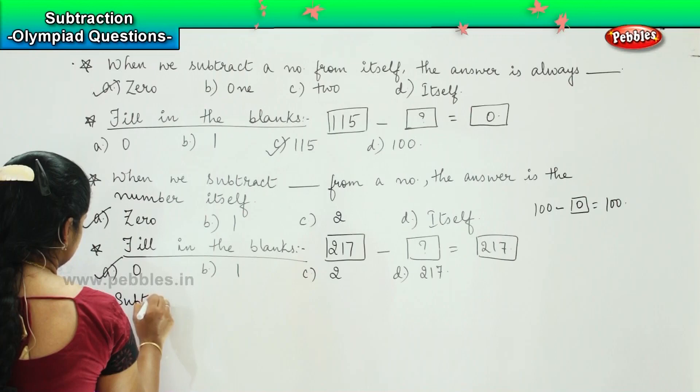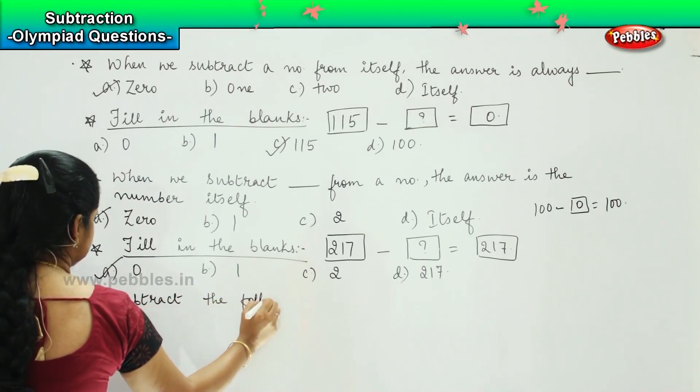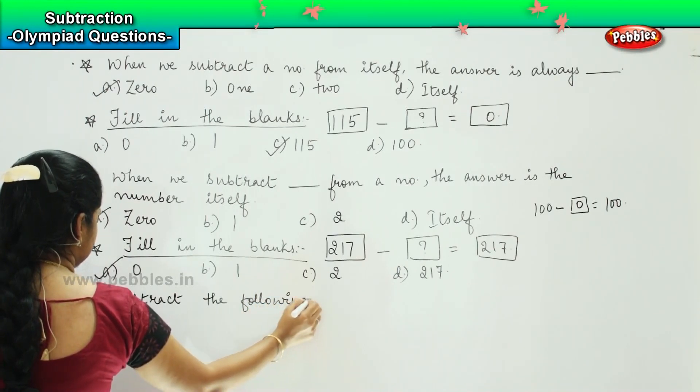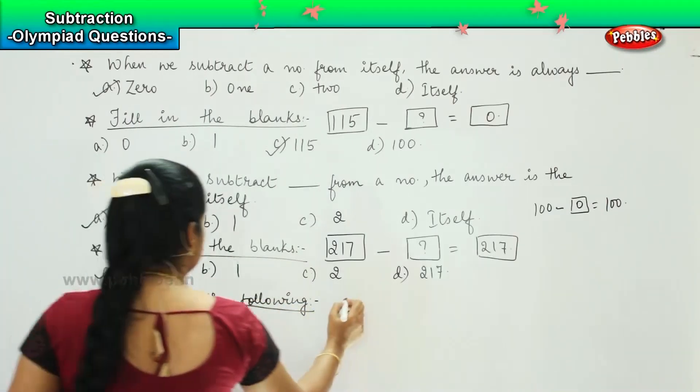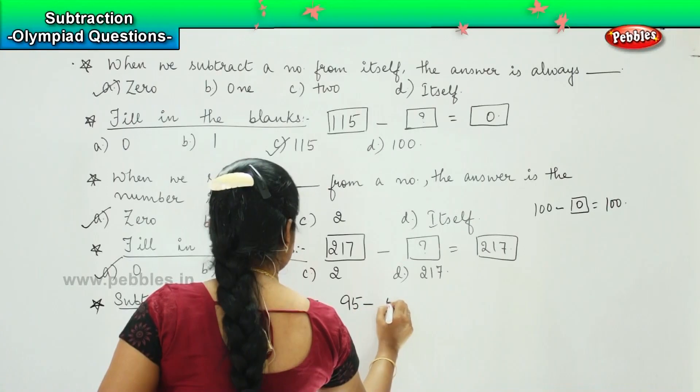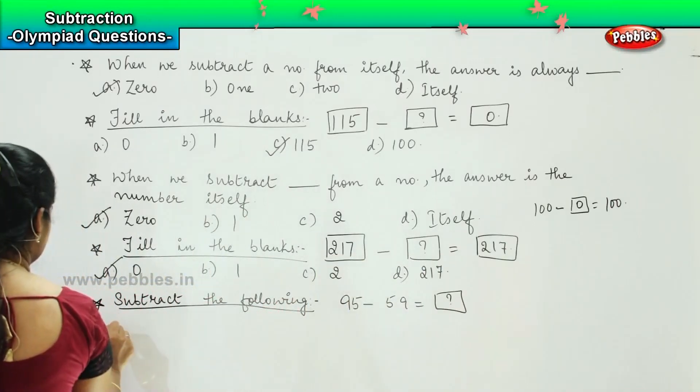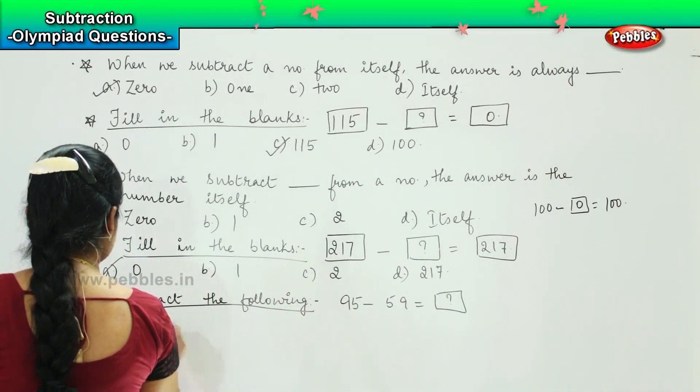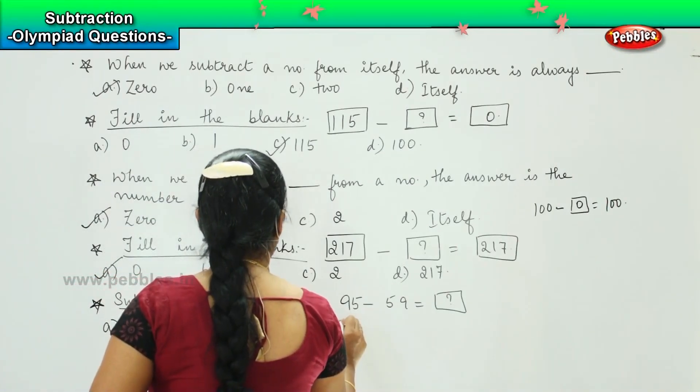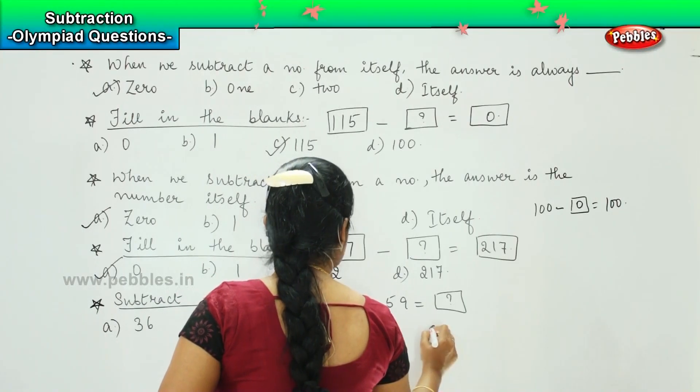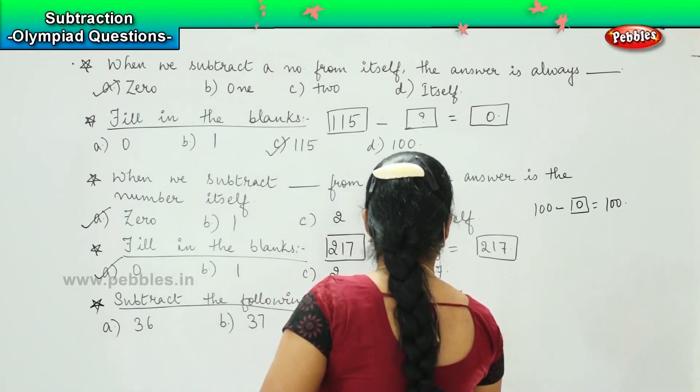Subtract the following. Ok. And your question is 95 minus 59 equals, we need to find the answer. Option a is 36, option b is 37, option c is 38, and option d is 86.